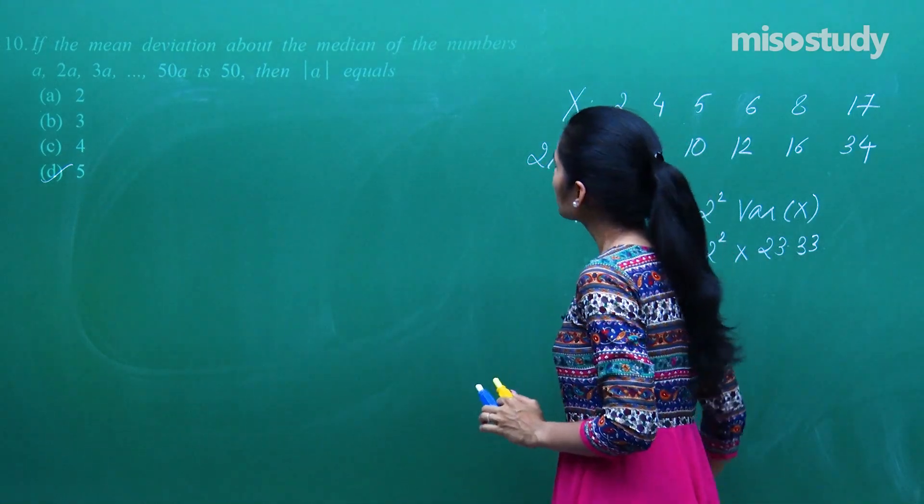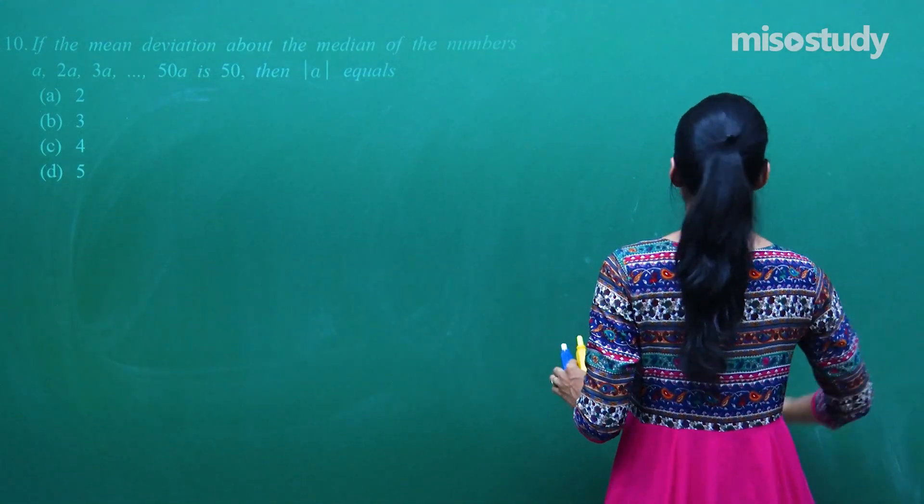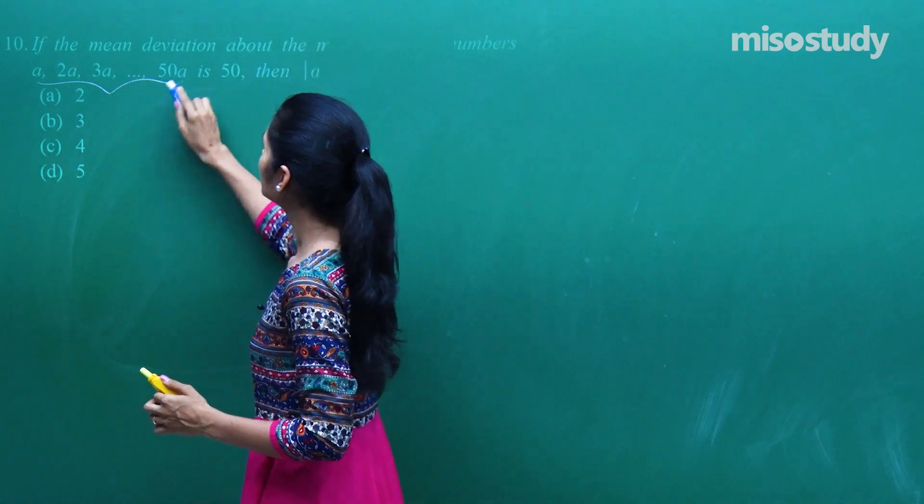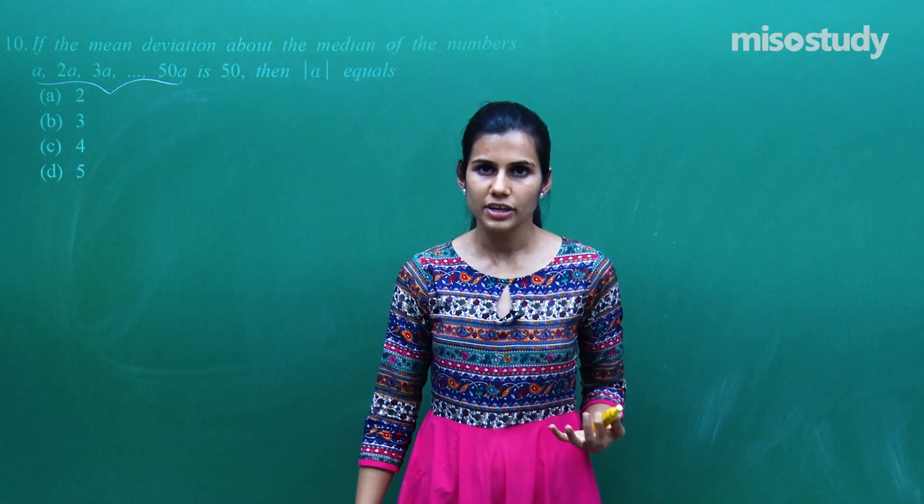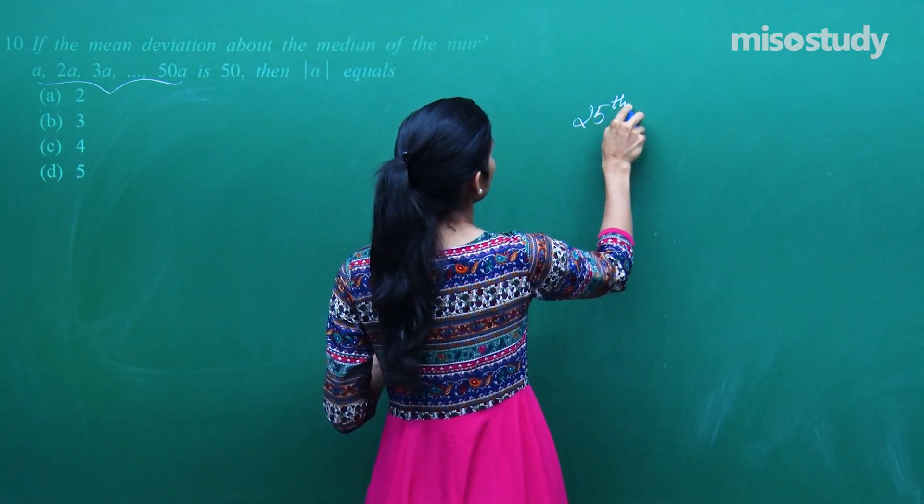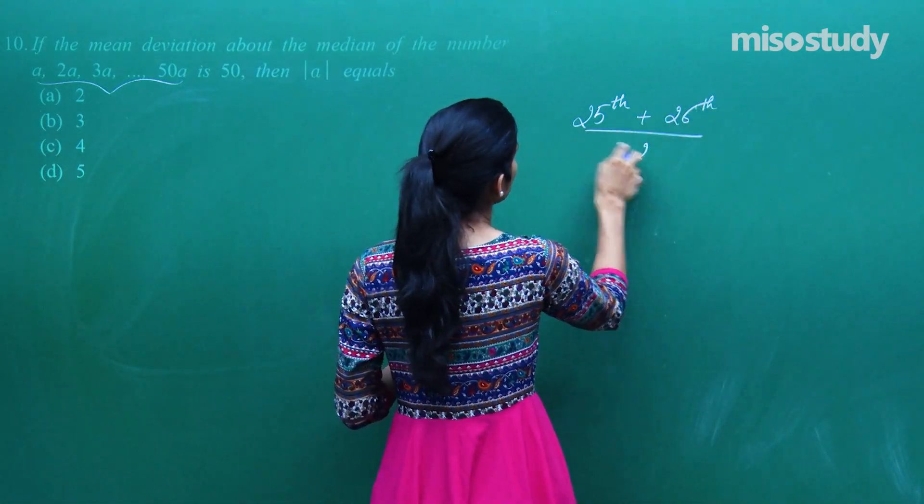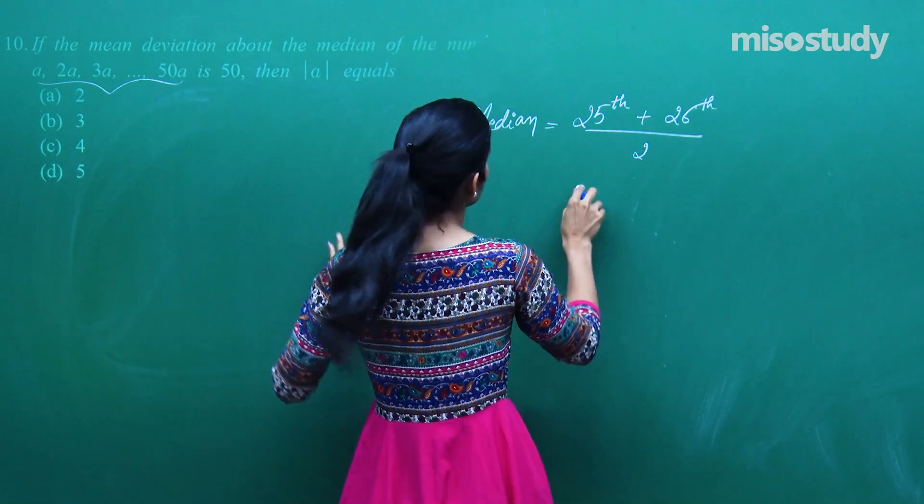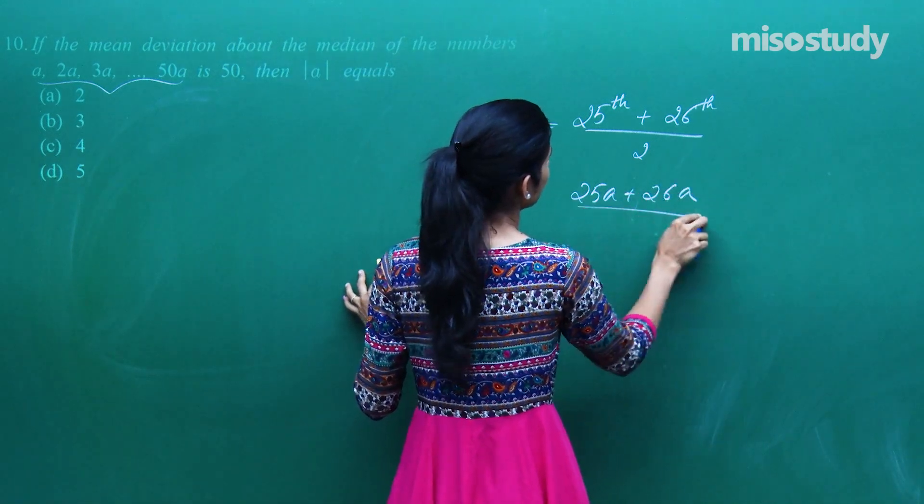If the mean deviation about median of these numbers is 50 toh mod a ki value find karna hai. Sabse pahle toh iska median find karte hain. Ye 50 observations hai even number. So n by 2th observation plus n by 2 plus 1th observation ka average mujhe dega median. So 50 by 2th observation matlab 25th observation plus 26th observation by 2 hoga mera median. Now 25th observation will be 25A and this will be 26A upon 2.